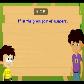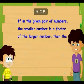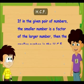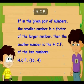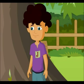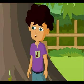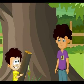If you have a pair of numbers where the smaller number is a factor of the larger number, then the smaller number is the HCF of the two numbers — like 16 and 4: 4 is the HCF of 16 and 4. Now come on, let's build the tree house.